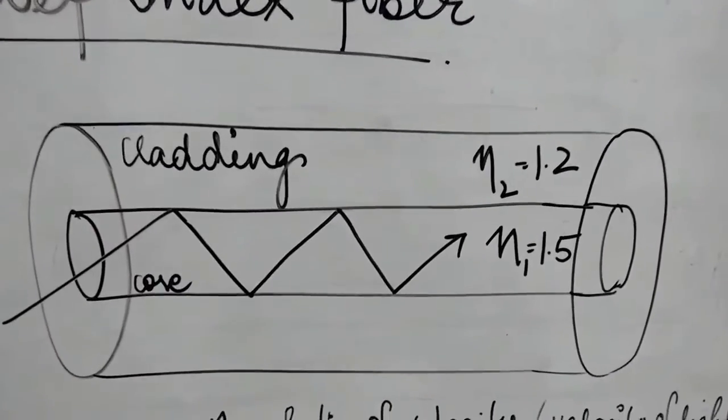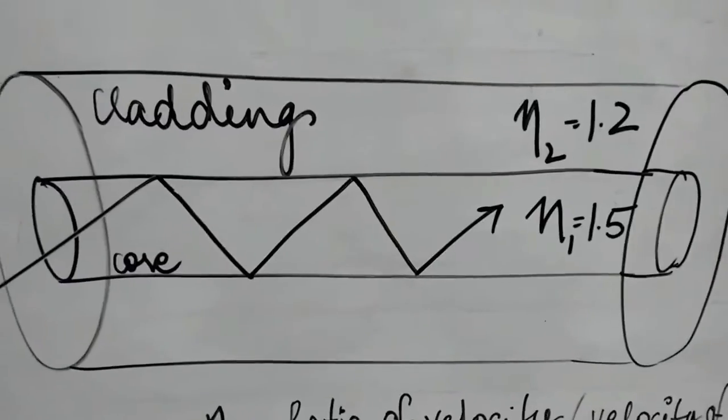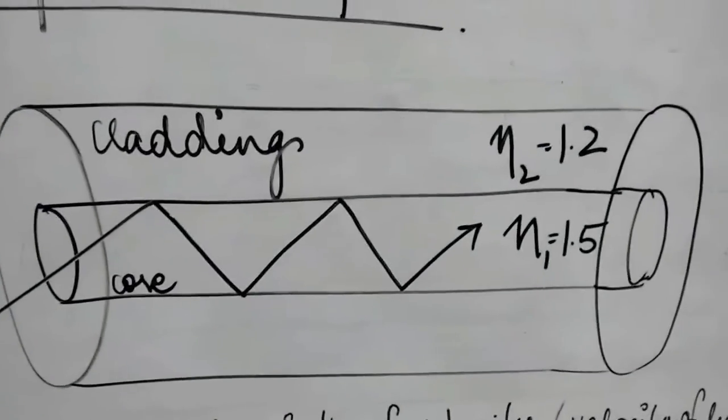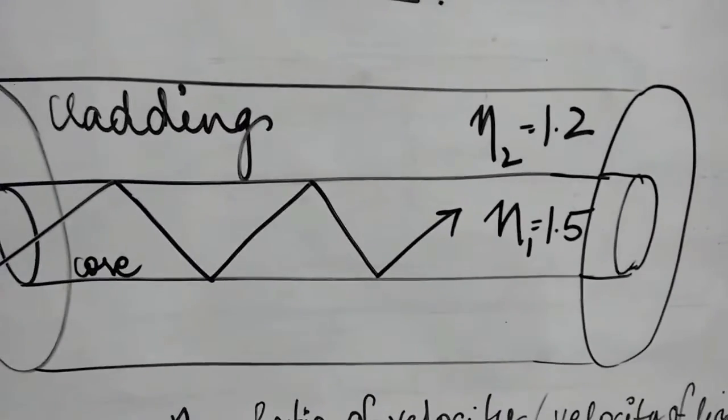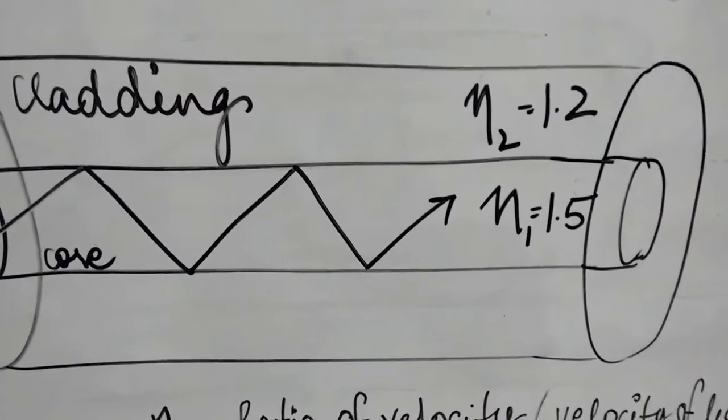In step index fiber, let's say we have an optical fiber as shown in the figure and the core part is having the refractive index 1.5.